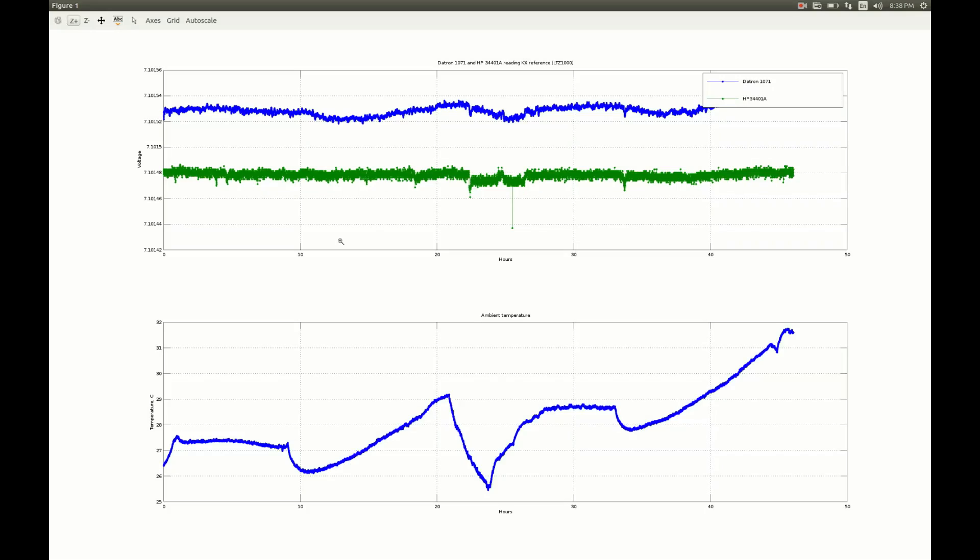Here I have data for about 46 hours. This is Datron and this is Hewlett-Packard, and this is ambient temperature. The scale here is 20μV per division which is about 2.8 ppm. Everything looks quite good except this glitch here and this small glitch here. Let's have a look at this one.